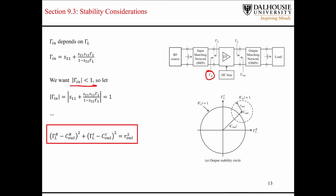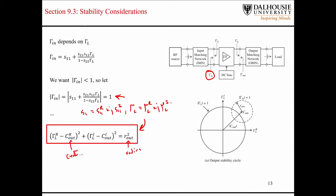We want to limit our input reflection coefficient to being less than zero. What we can do is set our input reflection coefficient magnitude equal to one. You can substitute the real and imaginary parts — for example, S11 would be this, gamma_L would be the real part plus the imaginary part — and do a bunch of algebra and you end up with this expression here. C_out is the center of the circle and R_out is the radius.